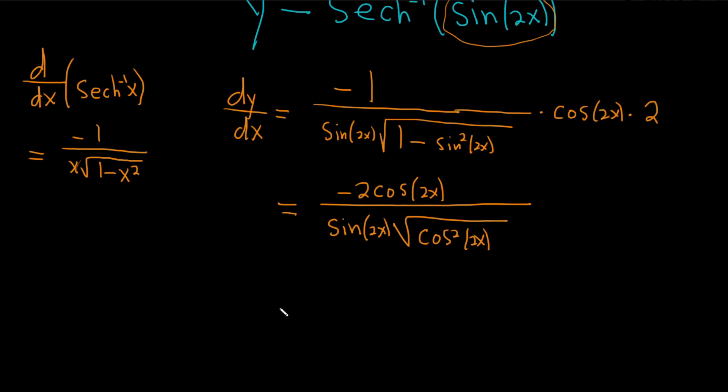All right, let's keep going. This is equal to negative 2 cosine 2x over sine 2x. We assume cosine is positive. This is just cosine 2x, so they cancel. So we get negative 2 over sine 2x.